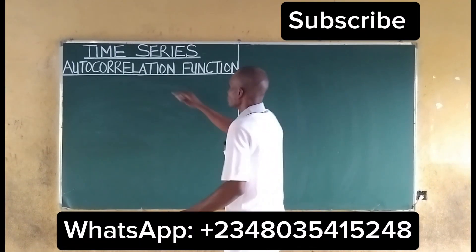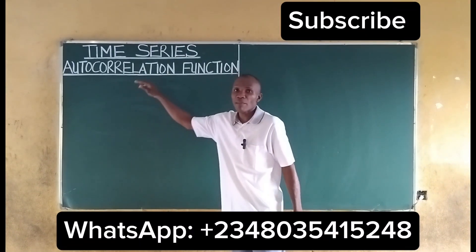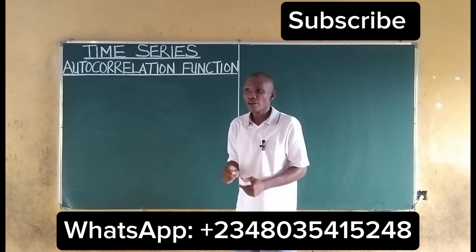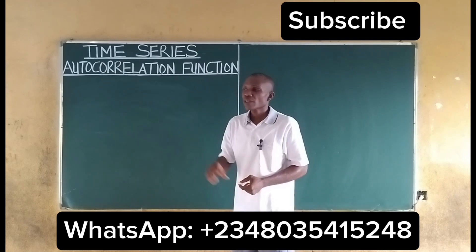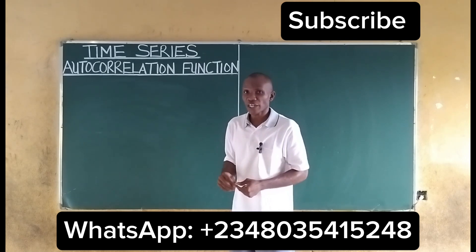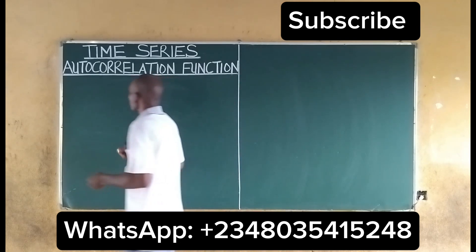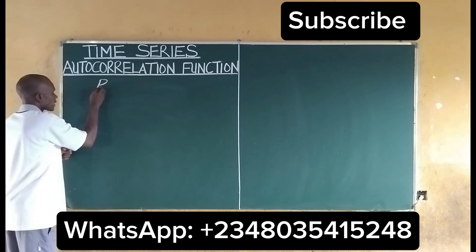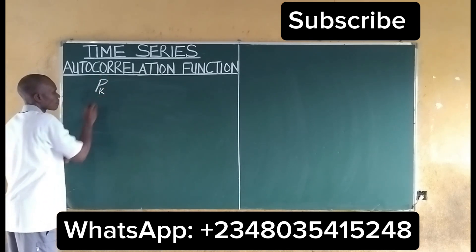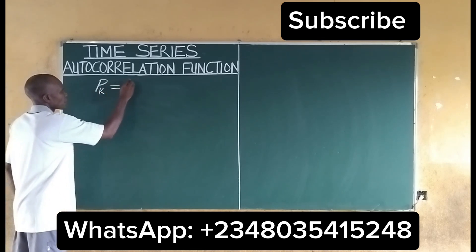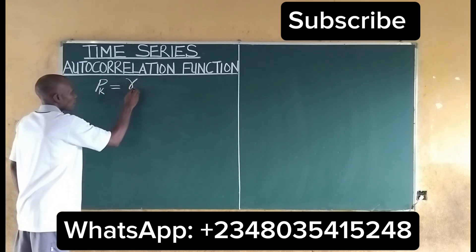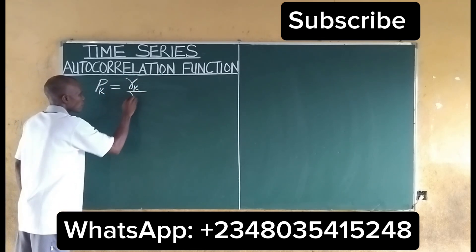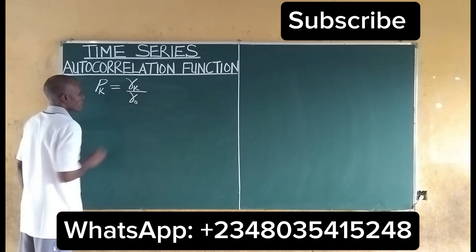In this video, we shall discuss the autocorrelation function. The autocorrelation function is denoted as ρ, and we know it will be γ(k) over γ(0).